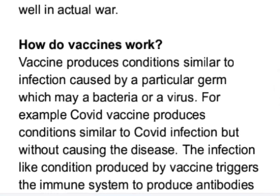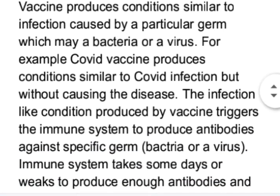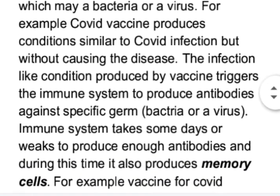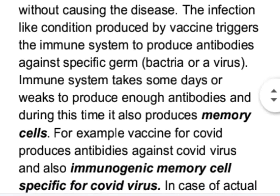Vaccines produce conditions similar to infection caused by a particular germ, which may be a bacteria or a virus. For example, a COVID vaccine produces conditions similar to COVID infection but without causing the disease. This infection-like condition triggers the immune system to produce antibodies against the specific germ. The immune system takes some days or weeks to produce enough antibodies, and during this time it also produces memory cells.